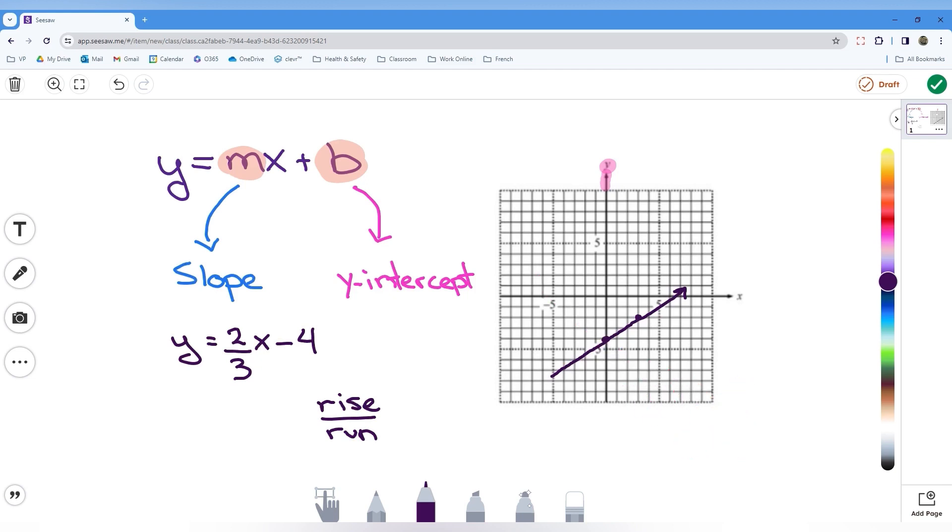So, I started on the y-intercept of negative 4, and I went up 2. There is my rise. And I went 3 to the right to get to another point that I can connect. Now, I said we can also go down 2. It did not matter if we went up or down. But again, it does make a difference if you go left or right. I'm trying to make a positive slope. So, this time, I would have had to go left to have these points be pointing in a positive slope direction.